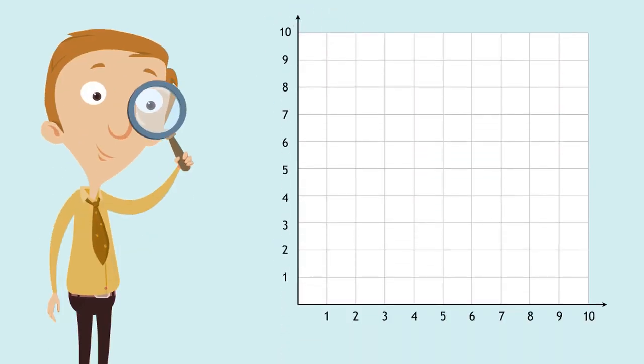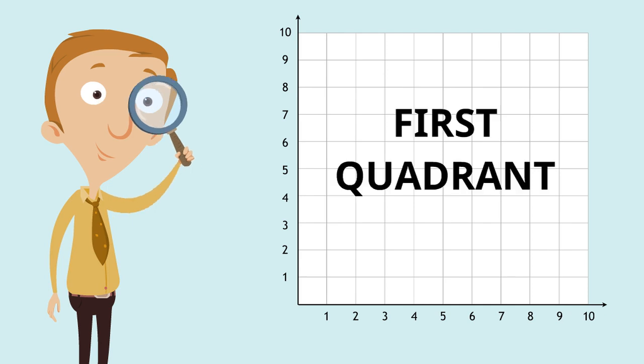What do we call this? Pause the video and write down an answer. Now you might have put down something like a graph or a grid and you're not entirely wrong, but in coordinate geometry we call this the first quadrant.